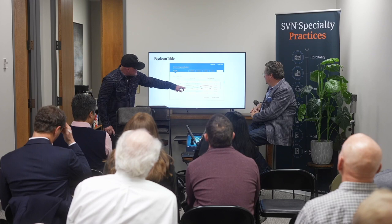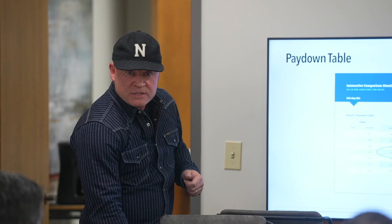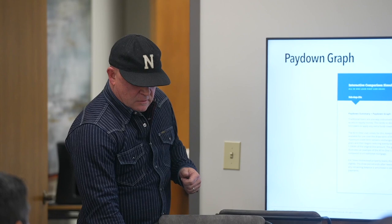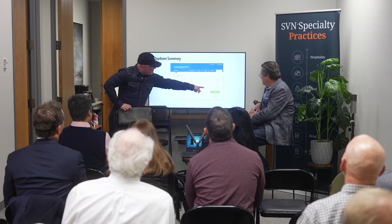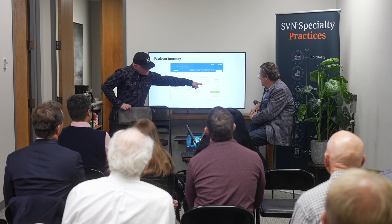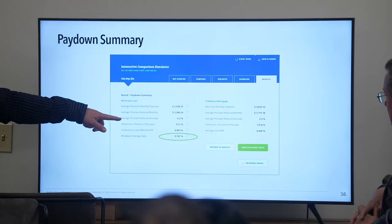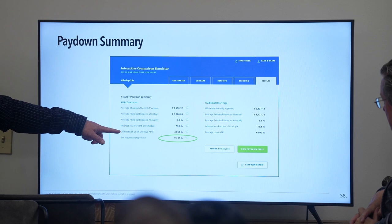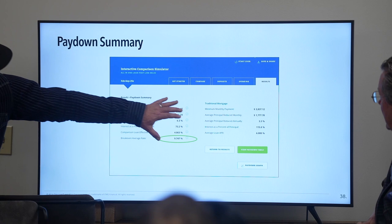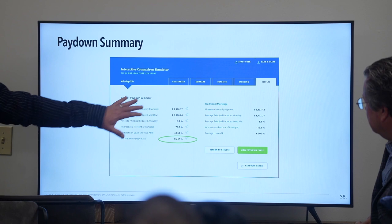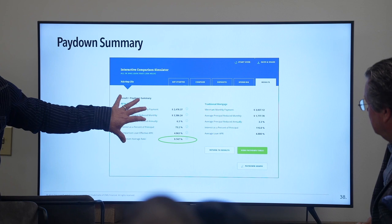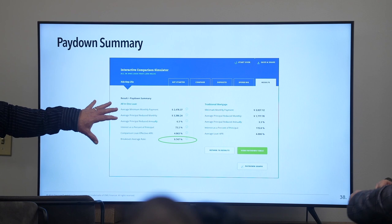Looking at the pay down time — 50 months — this is where they're at versus a traditional loan. The average APR on the traditional loan was 6%. The average pay down is about 3% of the balance per year. On the All-in-One, we're paying down about 6% of the balance per year, and the comparison loan APR essentially says this loan would have to have a 4% APR to cost the same amount — or conversely, it would have to be 4.47% instead of 7.9%.